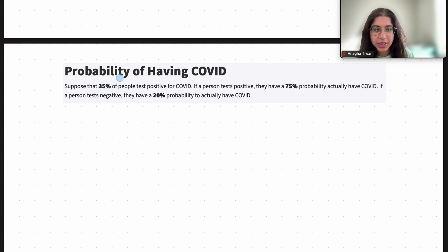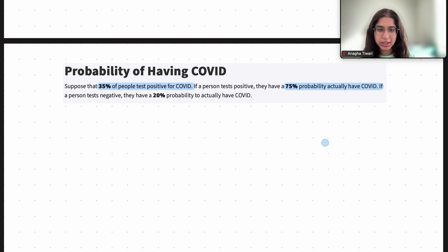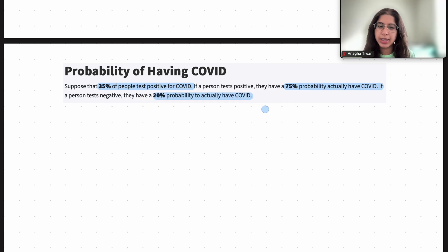Suppose 35% of people test positive for COVID. If a person tests positive, they have a 75% probability of actually having COVID. If a person tests negative, they have a 20% probability of actually having COVID.